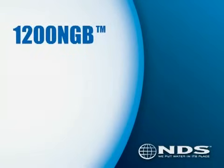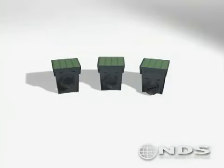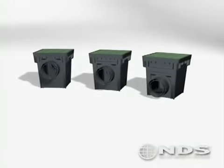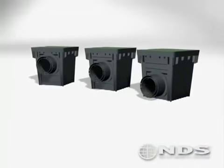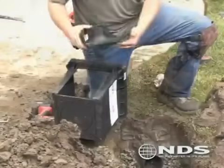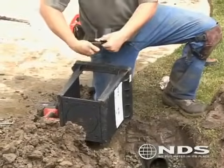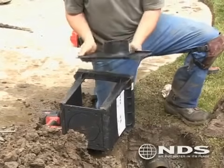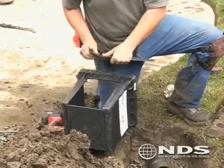As the leader in drainage products, NDS has developed the next generation of catch basins called the 1200 NGB. This revolutionary catch basin has outlets that can be adjusted to one of three different height positions — high, middle, or low — giving the user over four inches of adjustability.